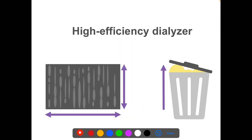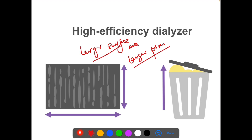High efficiency dialyser — that is high flux — is so called because it has a larger surface area and larger pores, providing more membrane area for diffusion and convection. Larger pores allow more convection and more diffusion. So larger surface area and larger pores make a dialyser high efficacy.